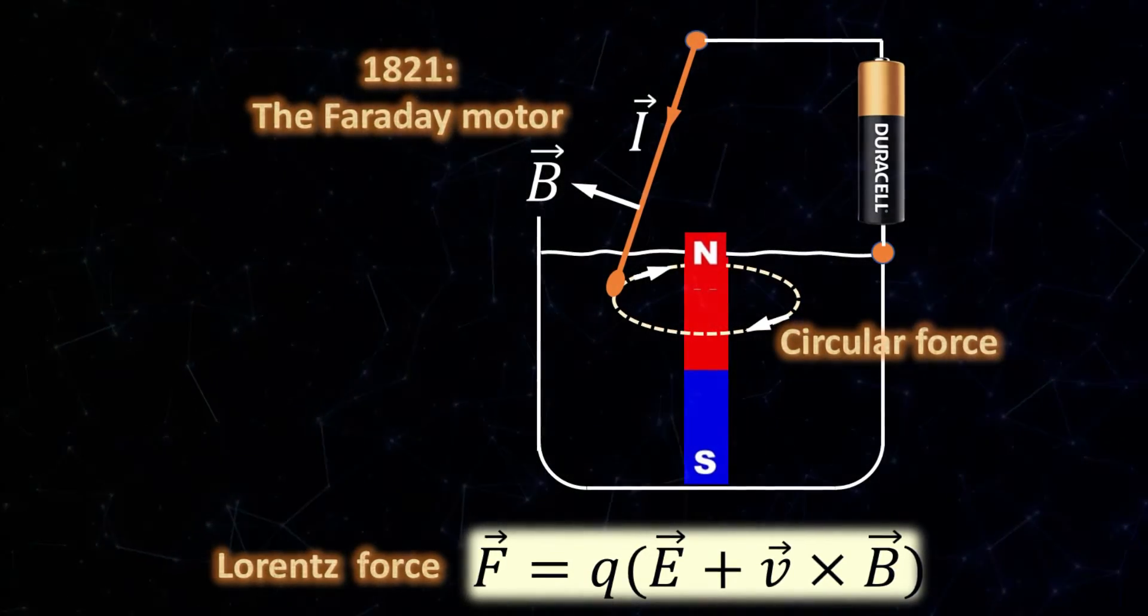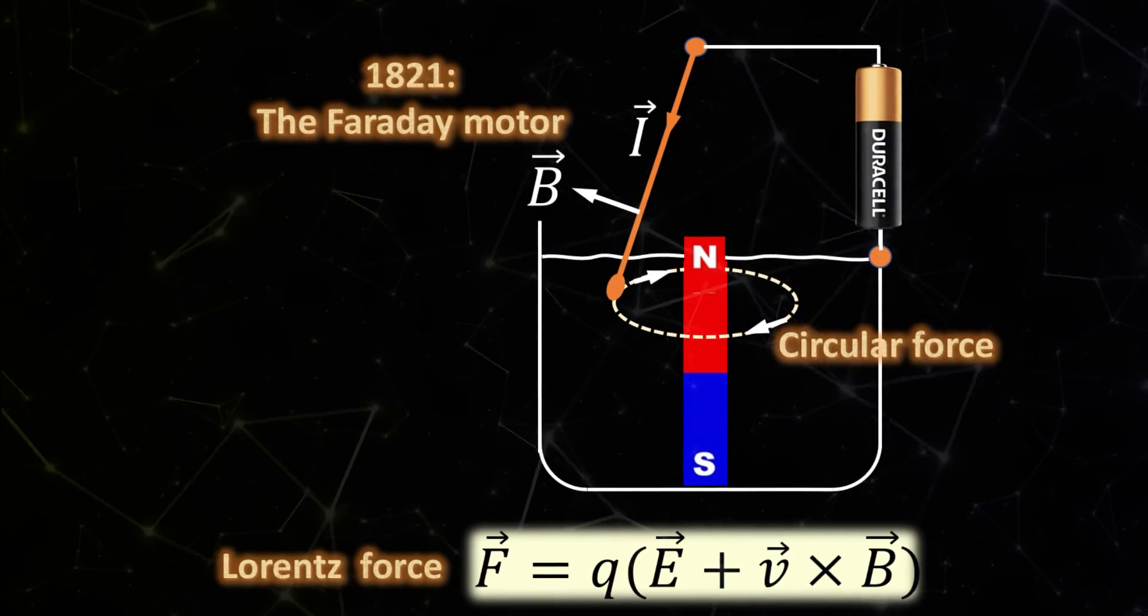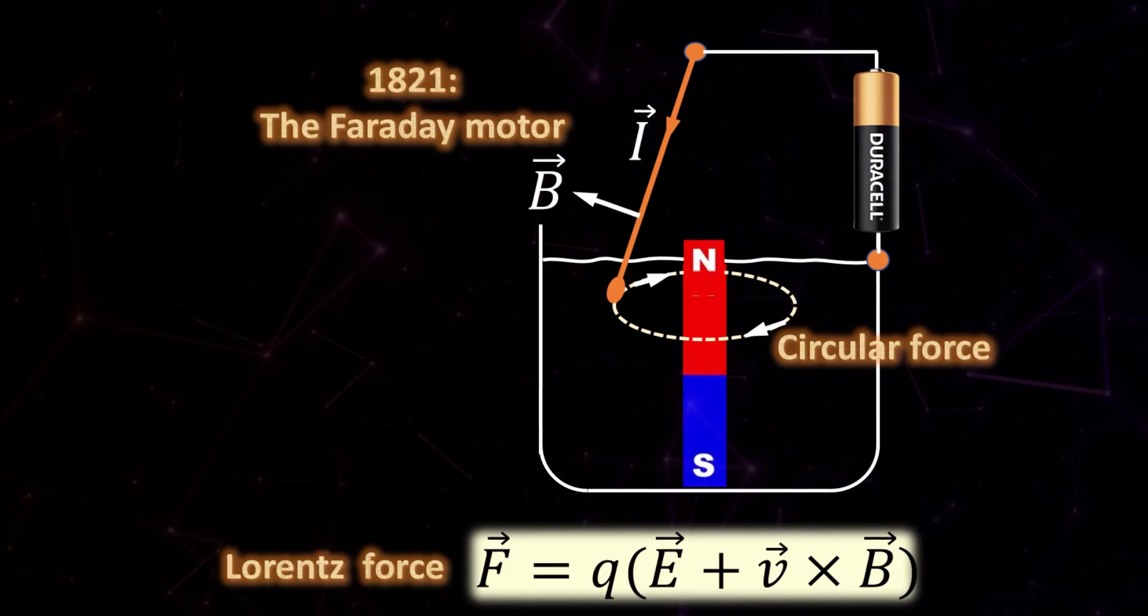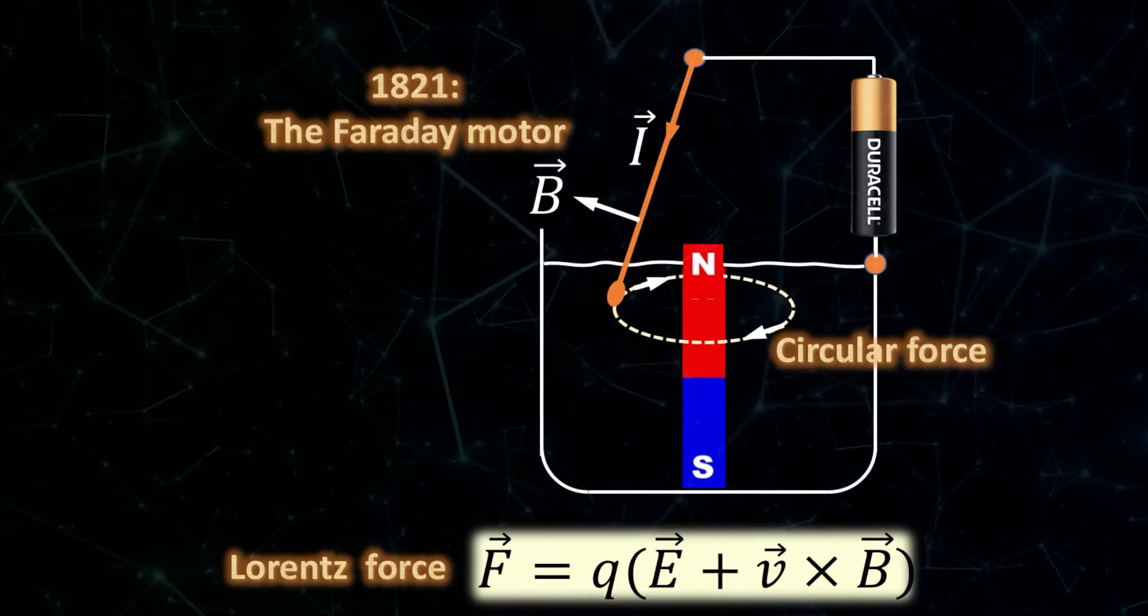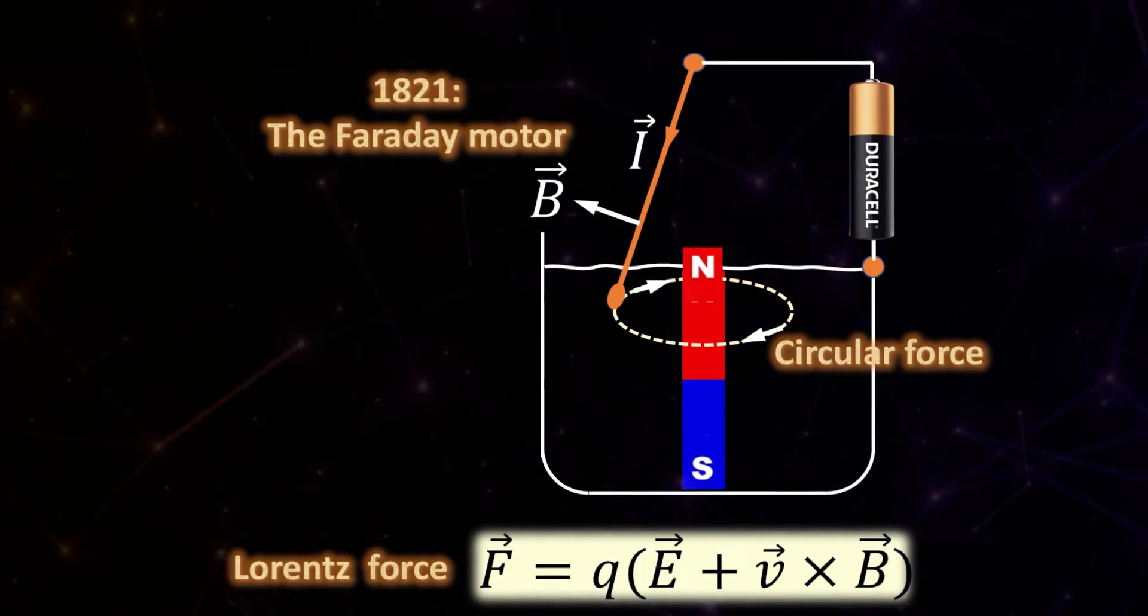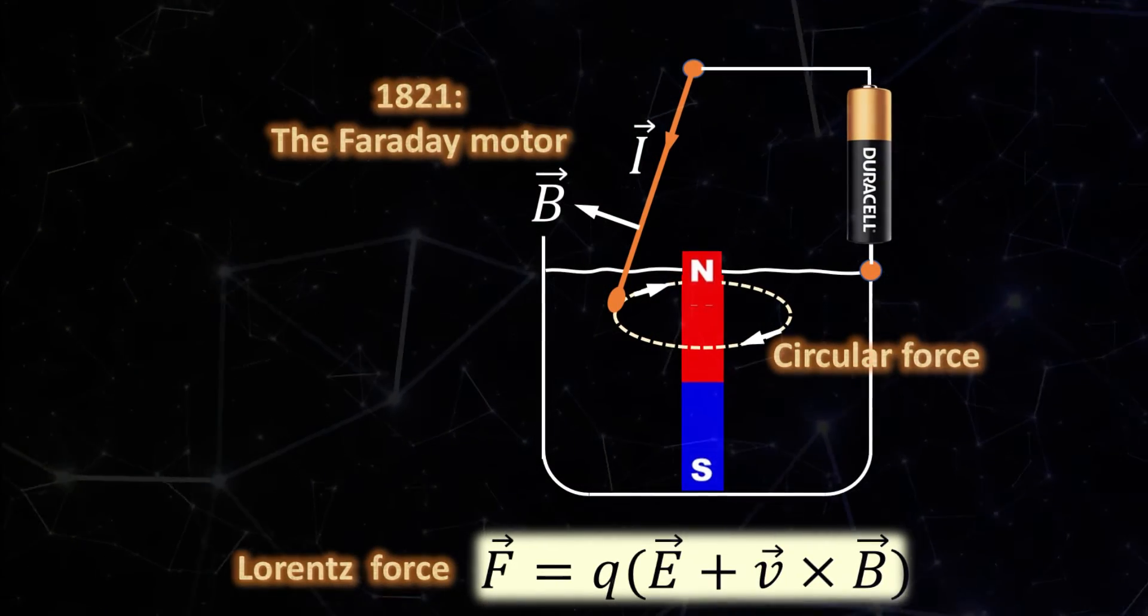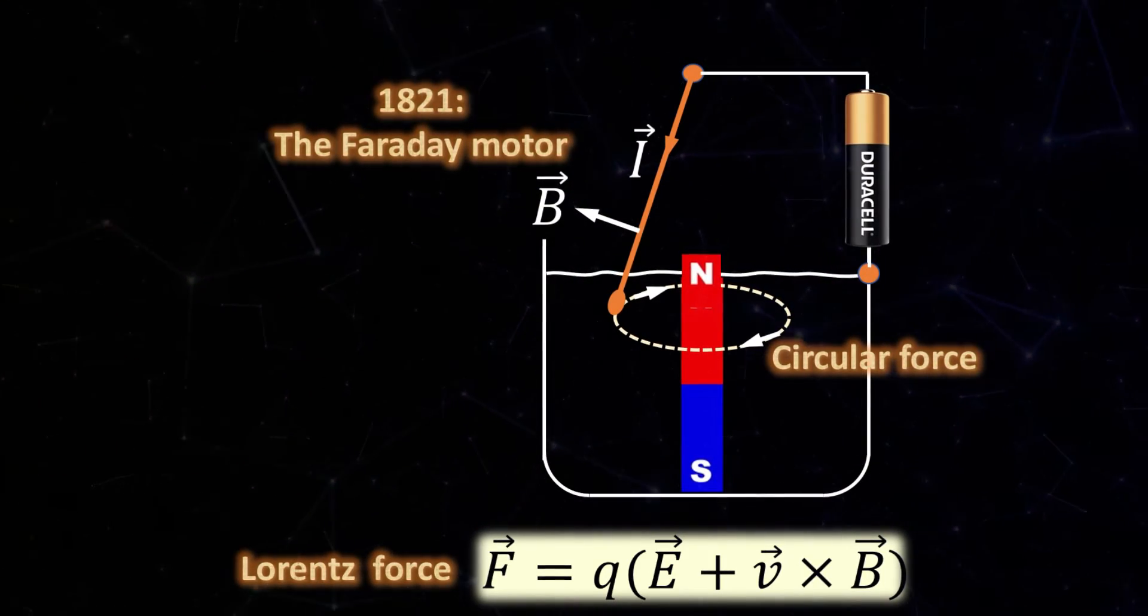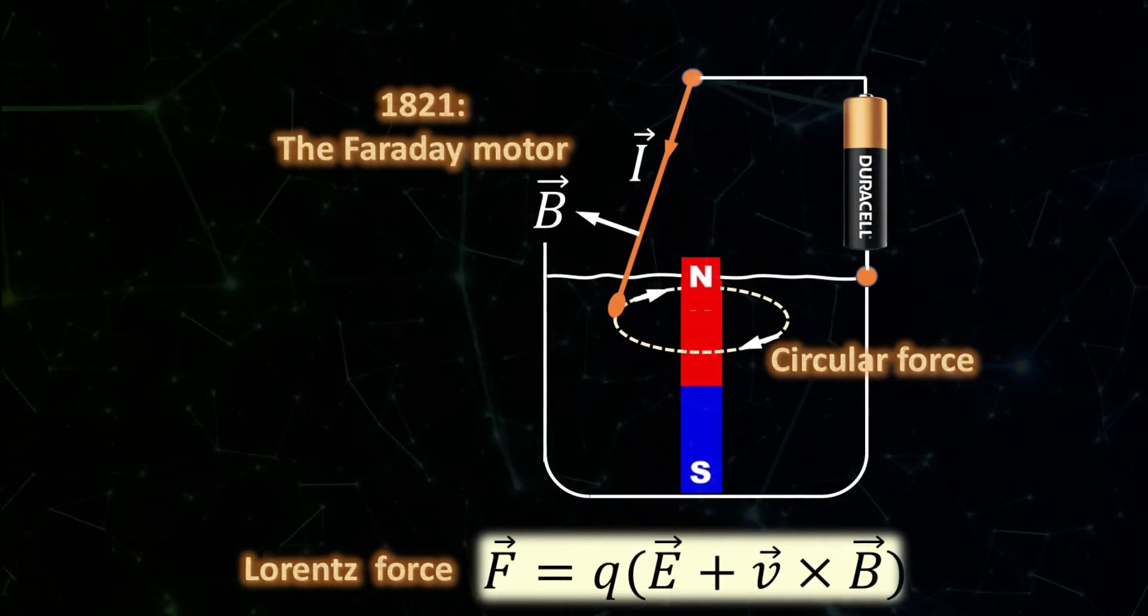Faraday secured a bar magnet at the bottom of a basin and filled it up with mercury, exposing only the top segment of the bar magnet. He dangled a short wire from a supporting stem so that its bottom end dipped in the mercury. Then he connected the top end of the wire to a battery with the other end of the battery terminal to the mercury thus forming a closed current circuit. To his great delight, the bottom end of the wire moved around the magnet in rapid circular motion.